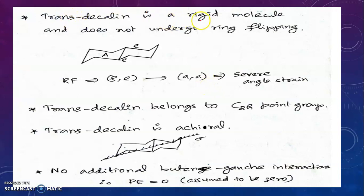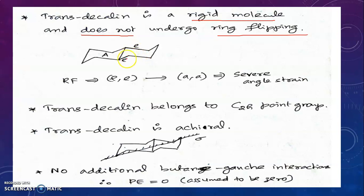Trans-decalin is a rigid molecule; it does not undergo ring flipping. The reason is that in the chair form of ring A, the bond between the rings is equatorial and the other bond is also equatorial — both bonds are equatorial. When ring flipping occurs, both equatorial bonds would have to become axial. This introduces severe angle strain that destabilizes that conformation, which is why trans-decalin does not undergo ring flipping.